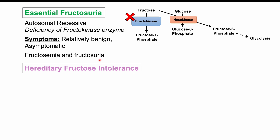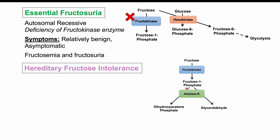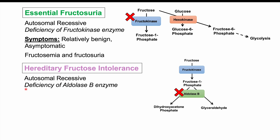Hereditary fructose intolerance involves the second enzyme, aldolase B. It is also an autosomal recessive condition, requiring one copy of the affected allele from each parent. Due to a deficiency of the aldolase B enzyme, we cannot effectively break down fructose-1-phosphate. Because fructokinase is still functional, it continues to phosphorylate fructose into fructose-1-phosphate, which then accumulates and cannot be processed properly, leading to a buildup of fructose-1-phosphate.